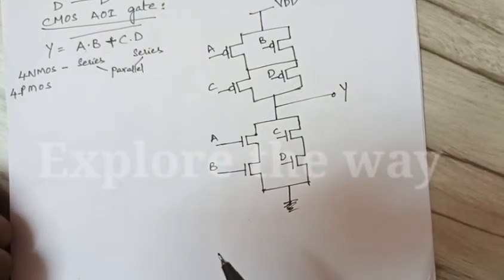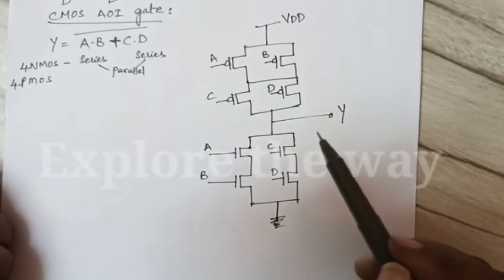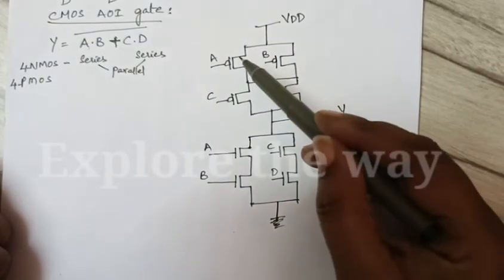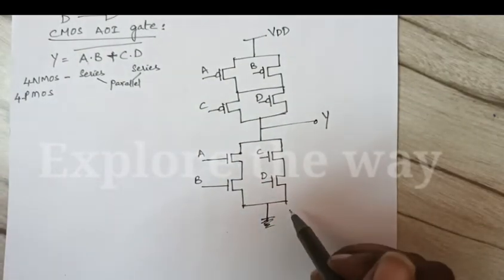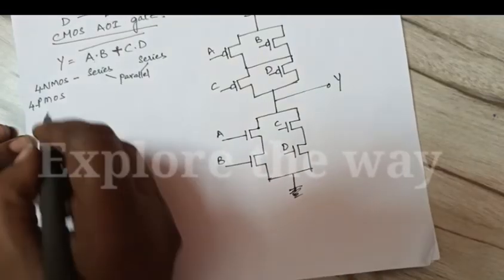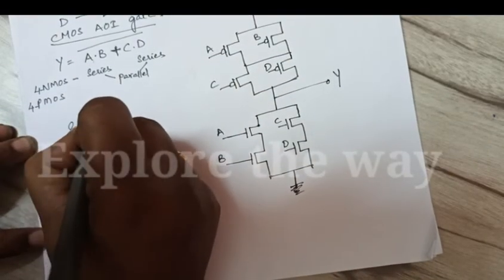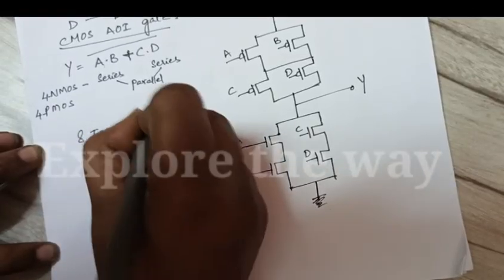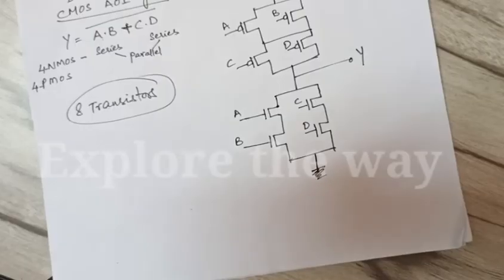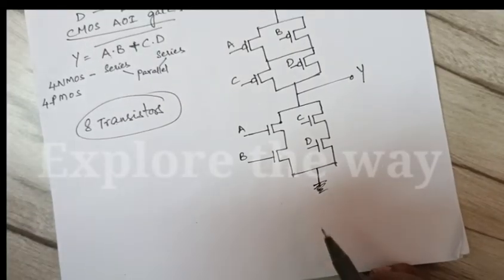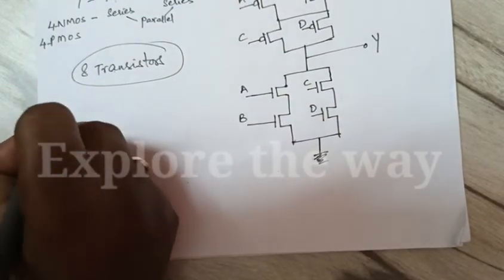Now let us verify how many transistors are required for CMOS AOI gate. From this diagram it requires 4 PMOS transistors and 4 NMOS transistors. Totally 8 transistors are required.